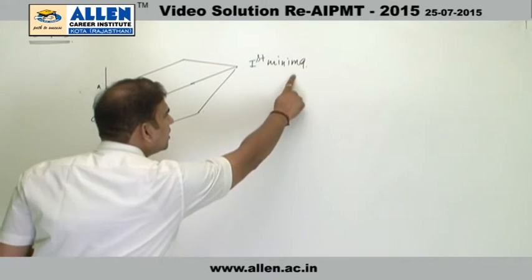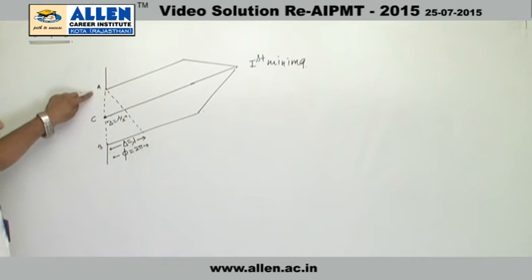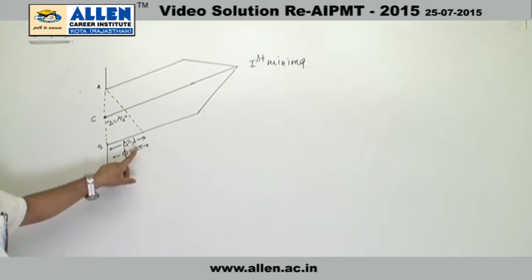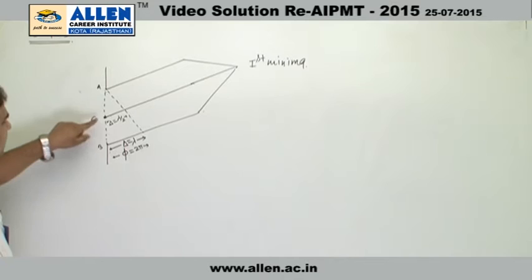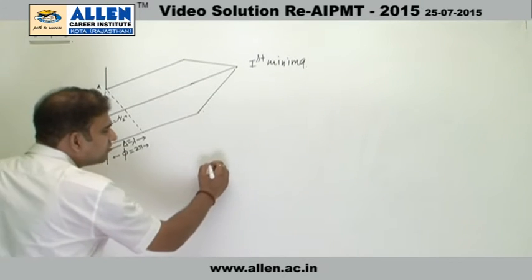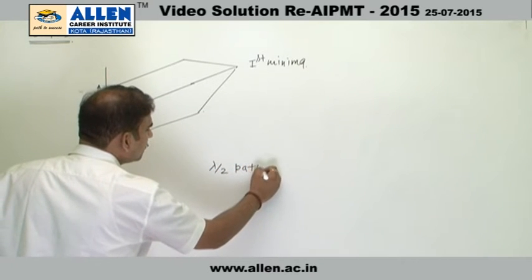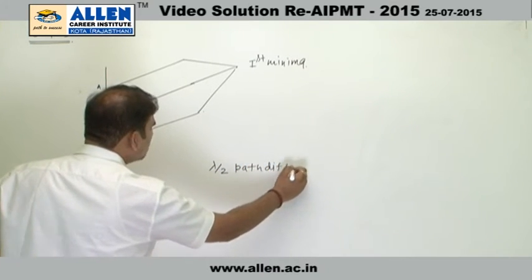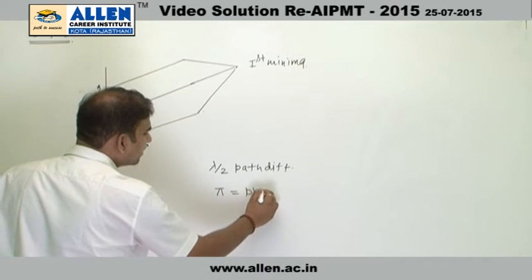For first minima, path difference between the secondary wavelets coming from A and B must be lambda, so that the path difference coming from A and C is lambda by 2. And lambda by 2 path difference is corresponding to pi phase difference.